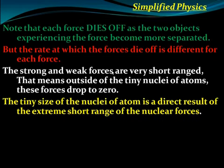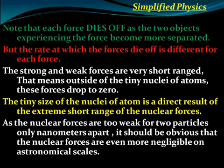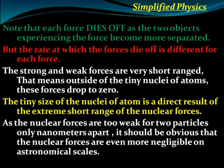The tiny size of the atomic nucleus is a direct result of the extremely short range of the nuclear forces. Nuclear forces are strong but very short range. As the nuclear forces are too weak for two particles even just one nanometer apart, it should be obvious that nuclear forces are negligible on the astronomical scale — strong and weak nuclear forces are negligible at large scales.